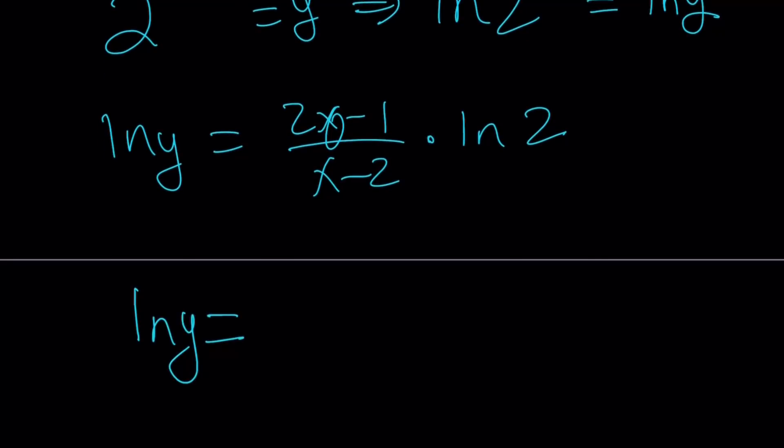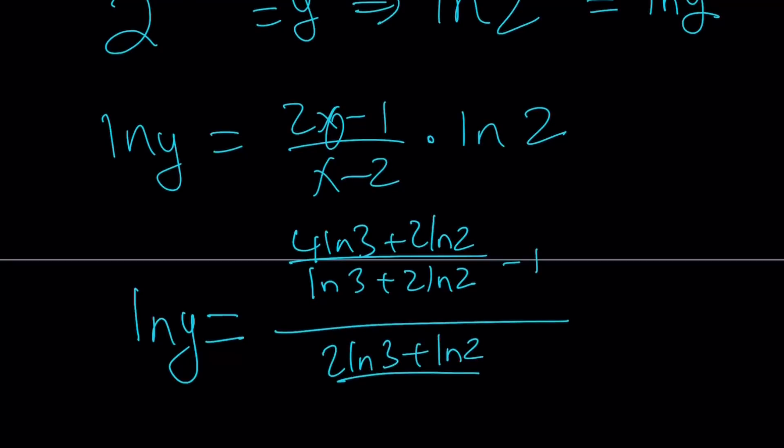If I multiply x by 2, I get 4 ln 3 plus 2 ln 2 divided by 2 ln 3 plus ln 2. I hope you don't mind me kind of going fast through this because we've done this. You know the steps, hopefully, especially if you've seen the first method.